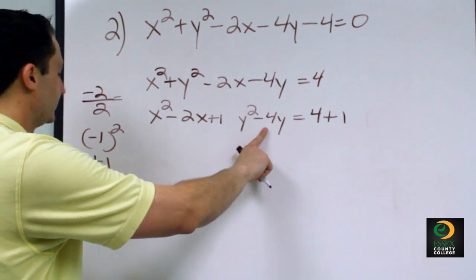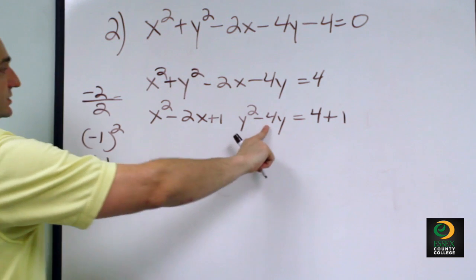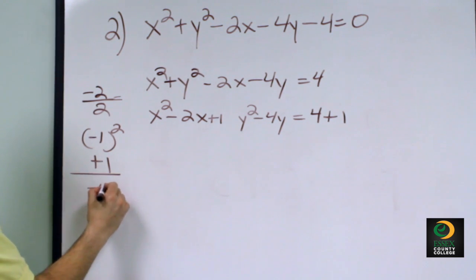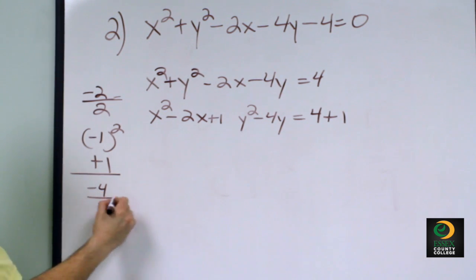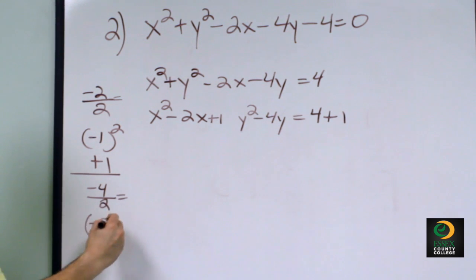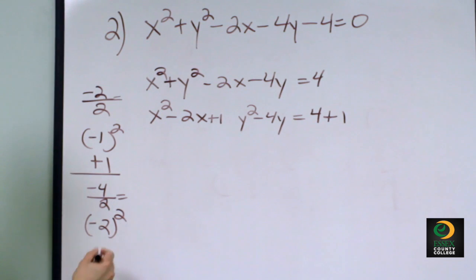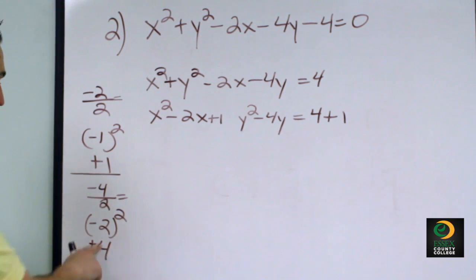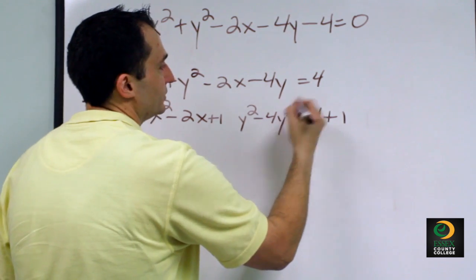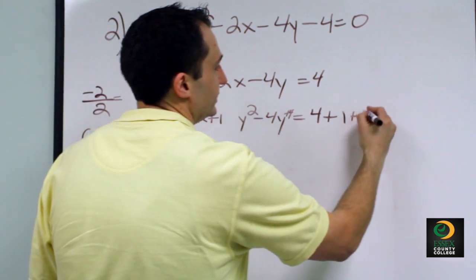Now we take our negative 4 and complete the square. We divide negative 4 by 2 to get negative 2, then square negative 2: negative 2 times negative 2 is positive 4. We add this positive 4 to both sides of the equation.